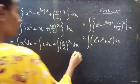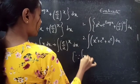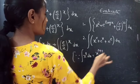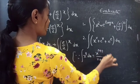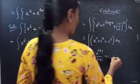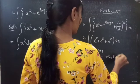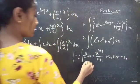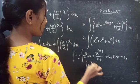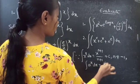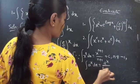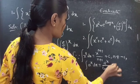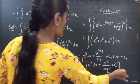Since we know that the integral of x power n dx equals x power n plus 1 by n plus 1 plus c, for n not equals to minus 1, and the integral of a power x dx equals a power x by log a to the base e plus constant c.